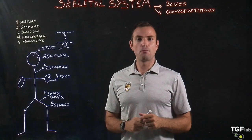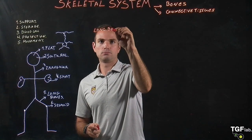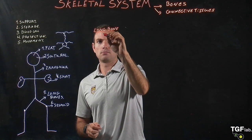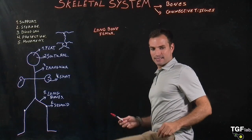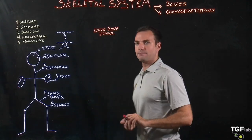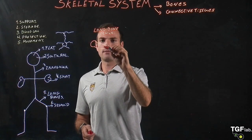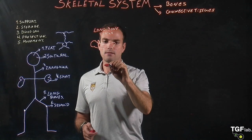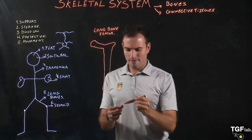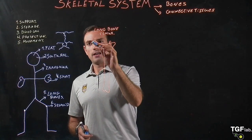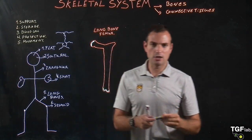As an example of a long bone, we have the femur. The femur is this bone here that goes from our hip to our knee. We have first the femoral head and then it goes down to our knee, where we have cartilage covering the femoral head and also cartilage covering the knee.